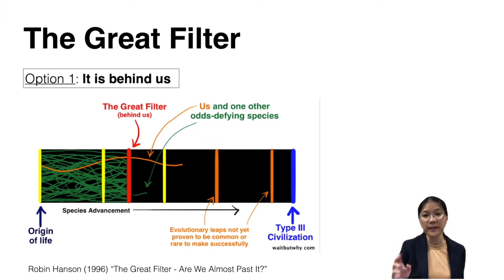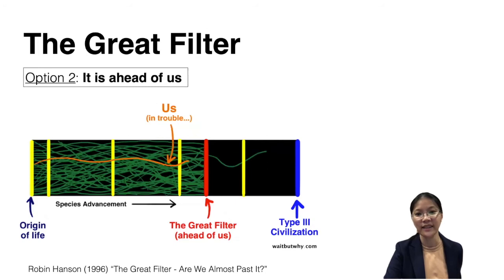Now in terms of the great filter, there are two options. The first is it could be behind us. So in our example, if it's the development of intelligent life, it's already behind us, so we've managed to cross this barrier and we're on our way to becoming a type 3 civilization if we pass the other barriers.